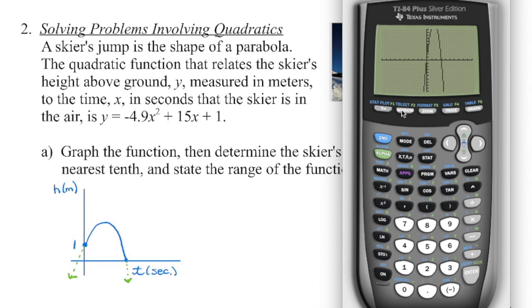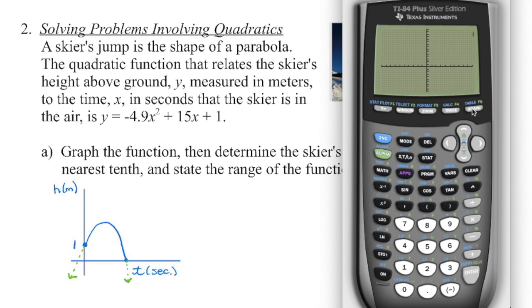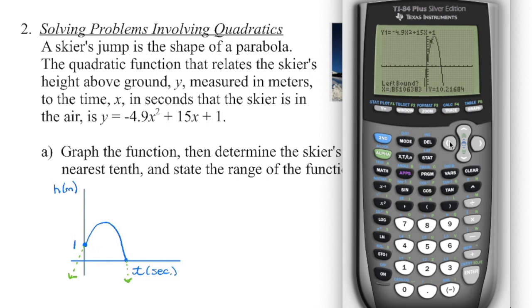I can't quite see the top of the parabola, so I'm going to go back into the window. The x-axis is okay, but on the y-axis I want the maximum to go a bit higher — let's try 15. Now we can see it. We go second function, trace — because we opened down, we have a maximum, so I'm going to choose number 4. We go to the left side of the vertex and press enter, then move the cursor to the right side, press enter, and then press enter one more time to guess.